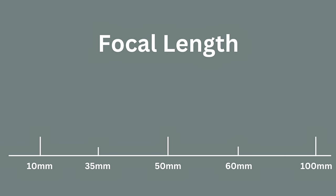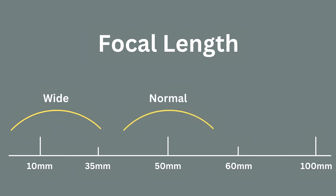On the focal length spectrum, we have wide lenses from 10 to 35 millimeters. Then we have what are called normal lenses that range from 35 to 55 millimeters — they kind of represent reality as it is. And then from 55 onwards, we have zoom lenses.